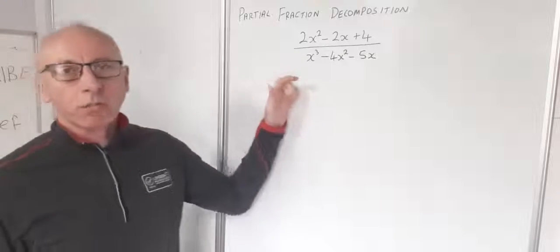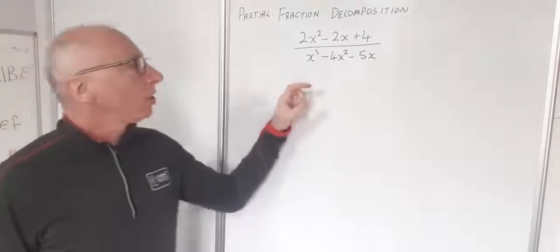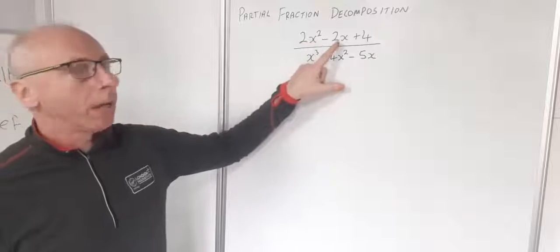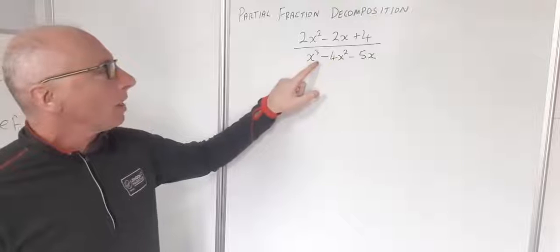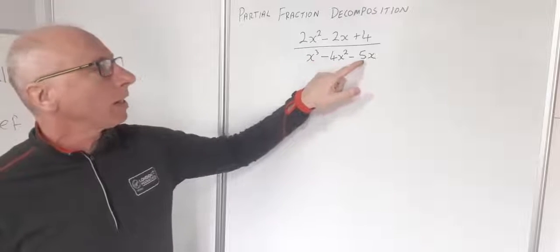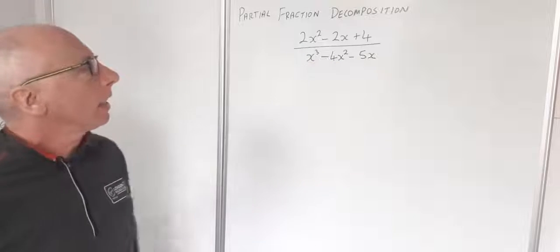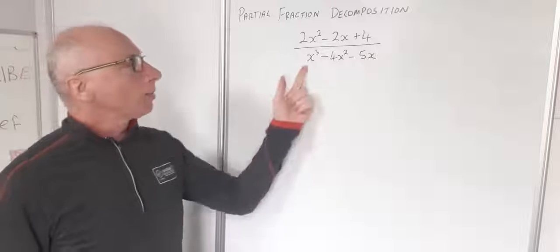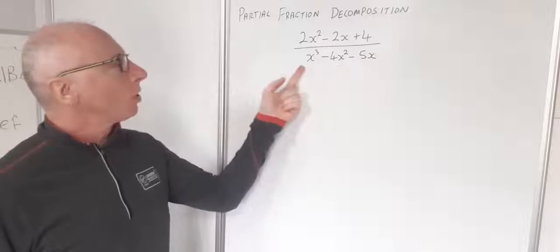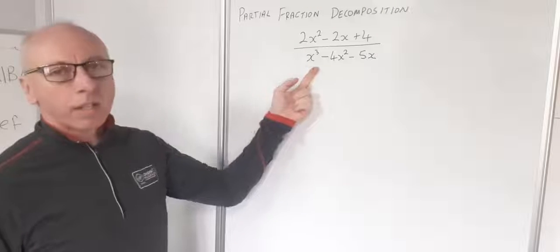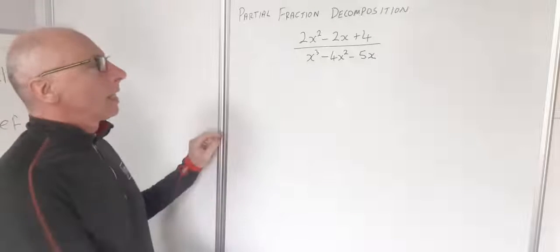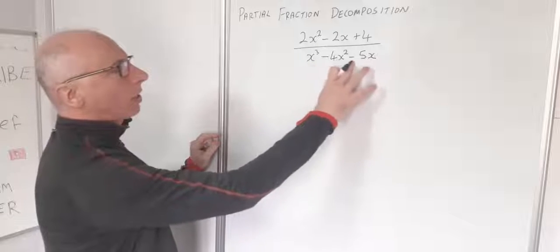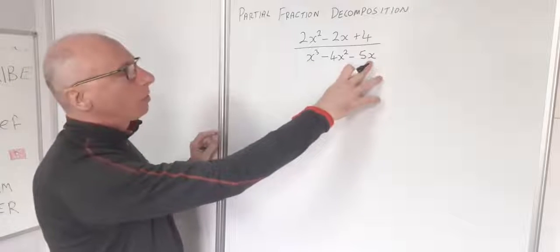In this video I'm going to do partial fraction decomposition of this expression: 2x squared minus 2x plus 4, divided by x cubed minus 4x squared minus 5x. For partial fractions, our goal to start with is to try and break this down into some sort of factors.